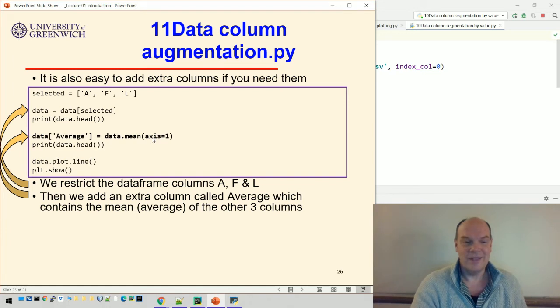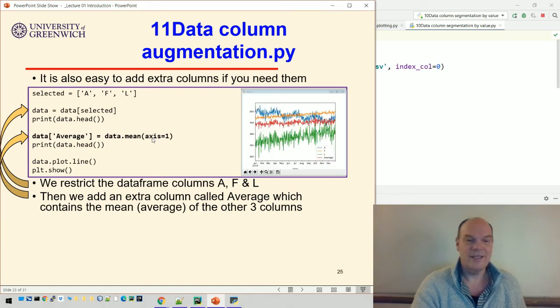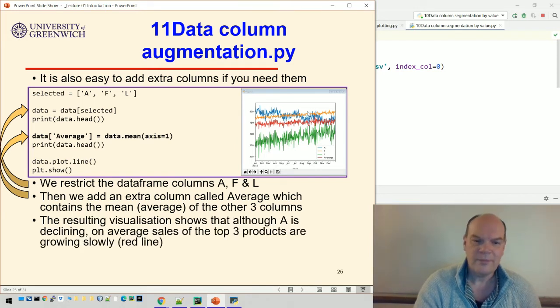So that gives us a nice way of just adding to the data. And then when we plot that with this line here, you can see that red line is the average of those three sets of sales.